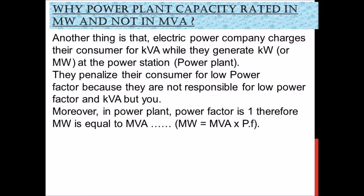Another thing is that electric power companies charge their consumers in KVA while they generate KW or MW at the power station. They penalize consumers for low power factor, because the utility is not responsible for the consumer's low power factor. In a power plant, power factor is 1, therefore MW equals MVA, since MW equals MVA multiplied by power factor.